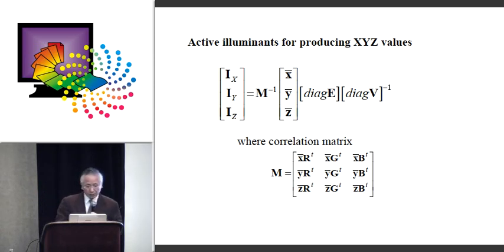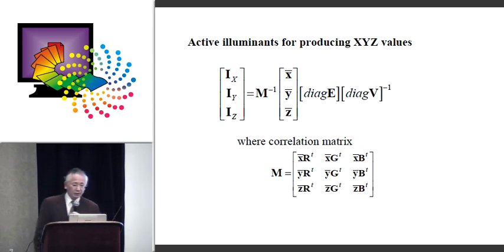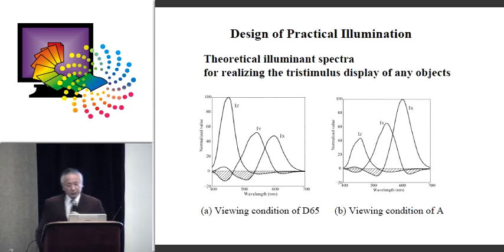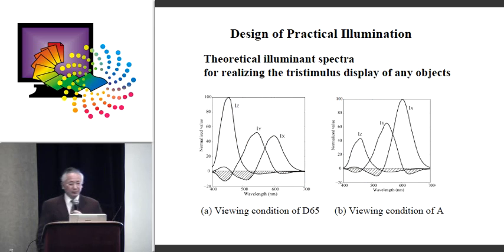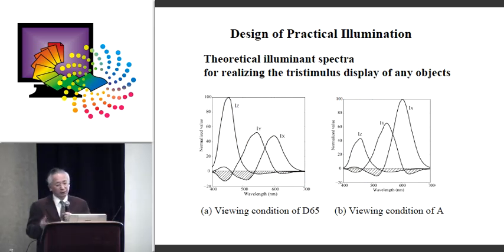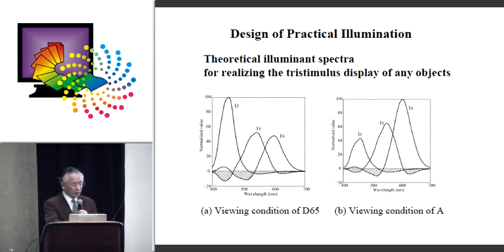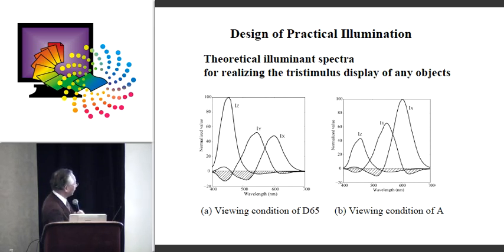We have calculated this equation. This slide shows the theoretical illuminant spectra needed to project onto the object in time sequence under different illumination conditions — under D65 and under D8.